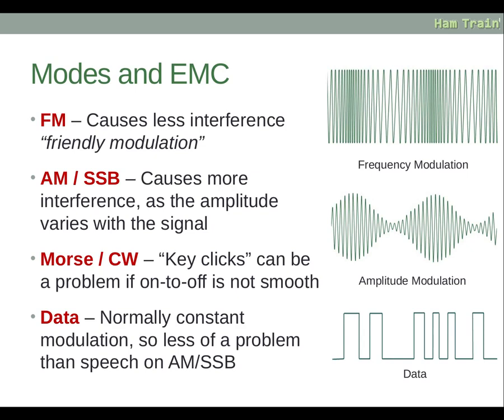For modes and EMC, FM causes less interference — you can remember this by thinking of it as 'friendly modulation.' FM varies the frequency and not the amplitude of the signal, so it causes less of a problem because it's more consistent. AM and SSB cause more interference because the amplitude varies with the signal, and that pulsing effect is what makes the interference more obvious.